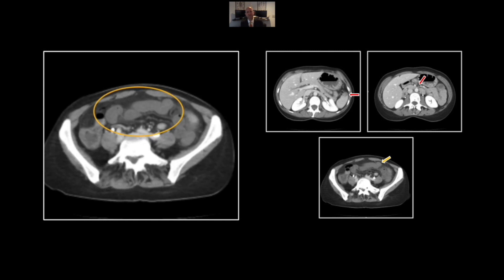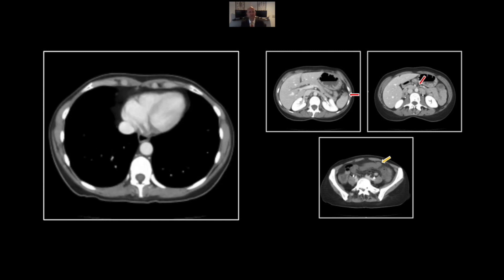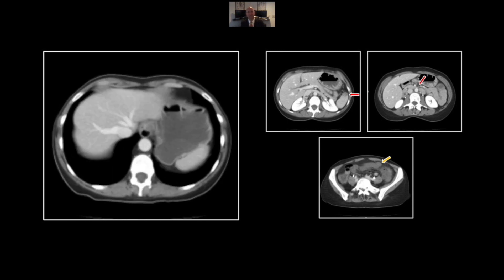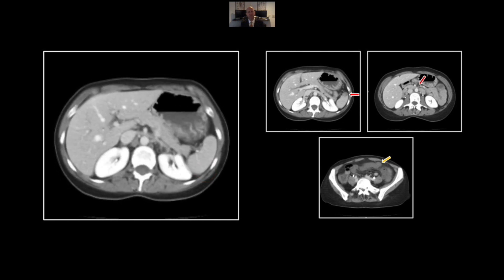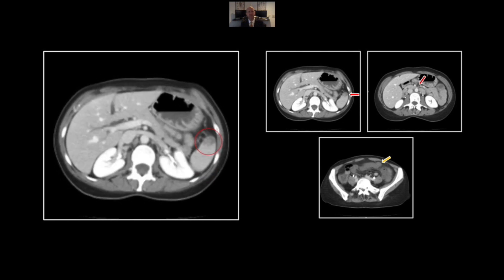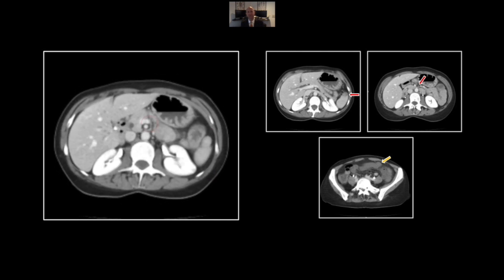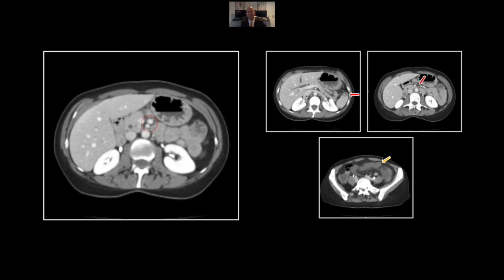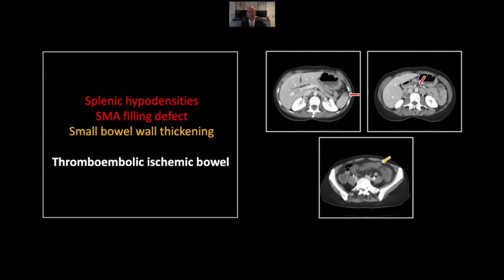This is a patient who had a cardiac source of emboli. On delayed images, the splenic hypodensities had resolved — do not let that dissuade you from the accurate diagnosis of a thromboembolic ischemic bowel.